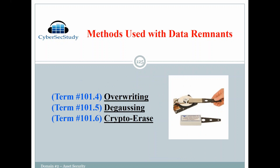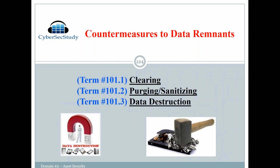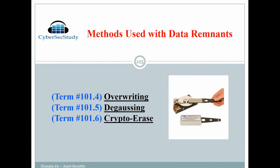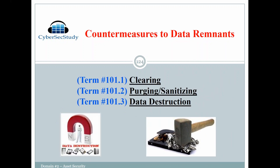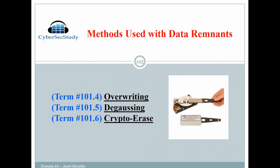Some methods used with data remnants: overwriting is an example of clearing, and degaussing is an example of data destruction. Overwriting: information stored in physical media is stored as ones and zeros — binary format. For example, the sequence of zeros and ones could represent the letter F. Depending on the number of bits in your system, that will determine the sequence of zeros and ones that make up every letter and symbol.